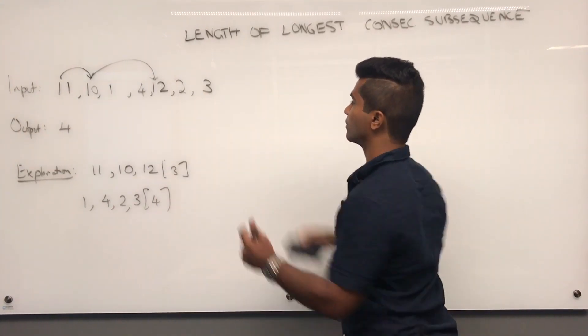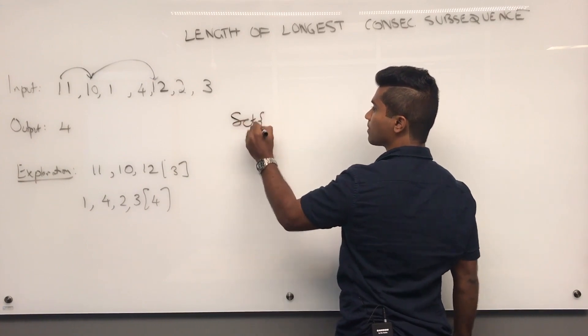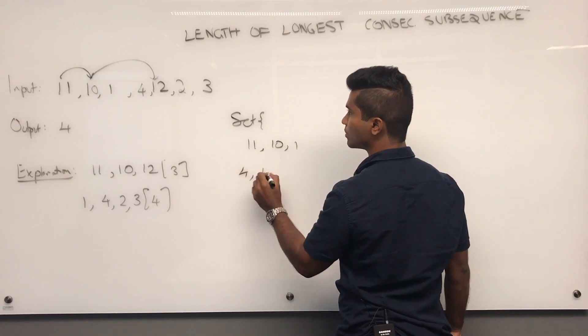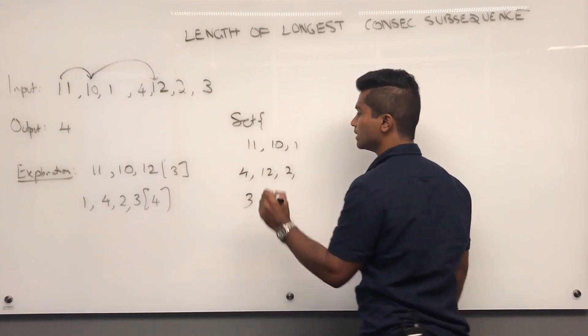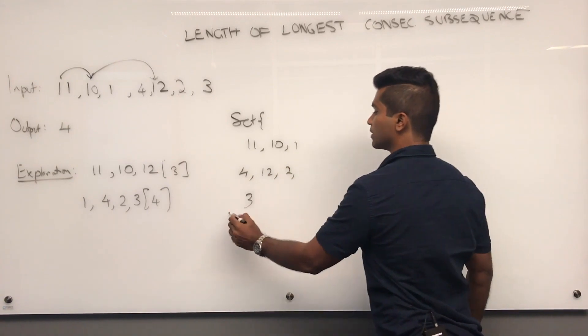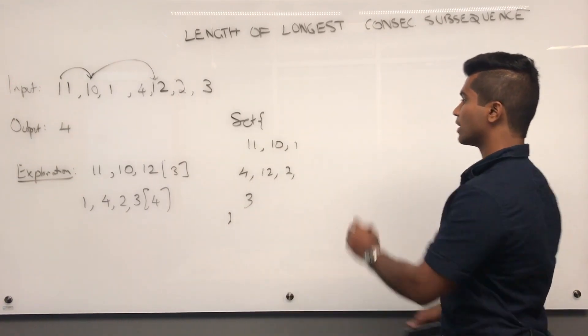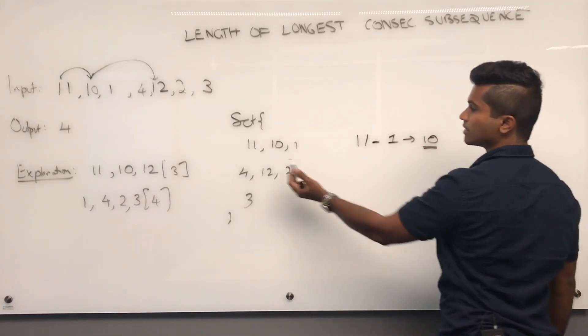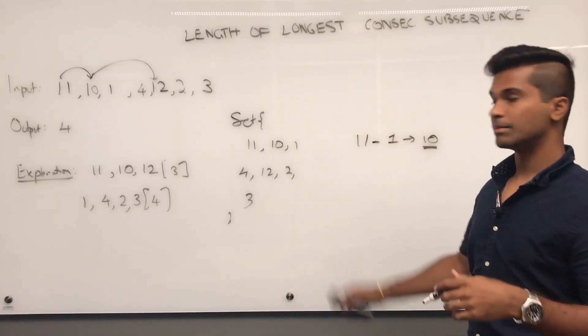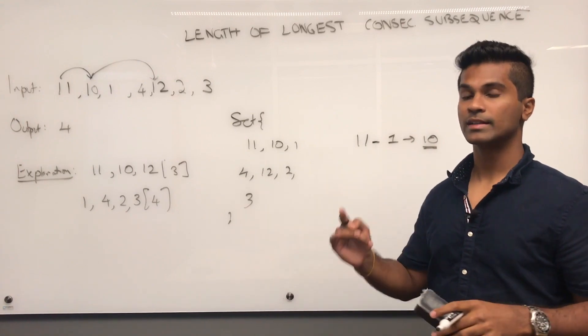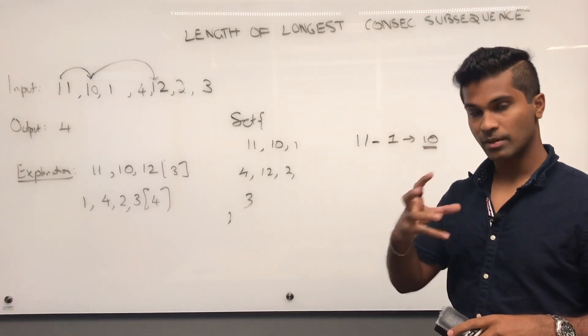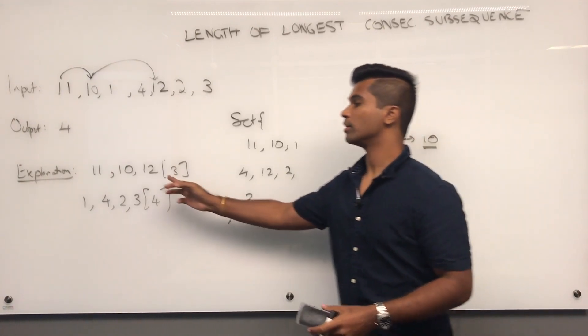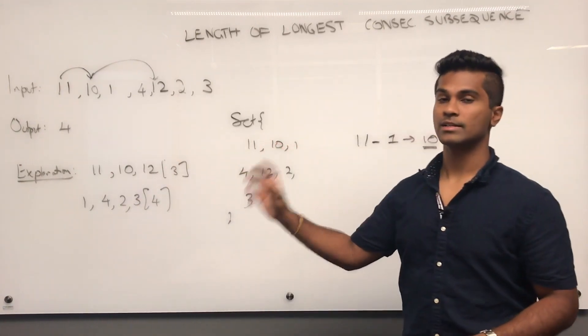So, let's see what this looks like for this problem. So, 11, 10, 1, 4, 12, 2, 3. Now, say for example, so when we start out with 11, 11 is going to first check, is there any number smaller than me? And it's going to see 10. It's going to see that 10 is part of the set. So, it's going to let 10 do the, be the first number of that subsequence. Now, don't get confused about the order. All we're checking in the set is does it exist or not?